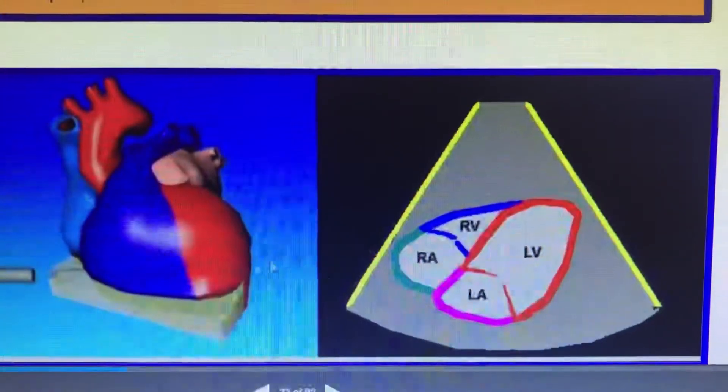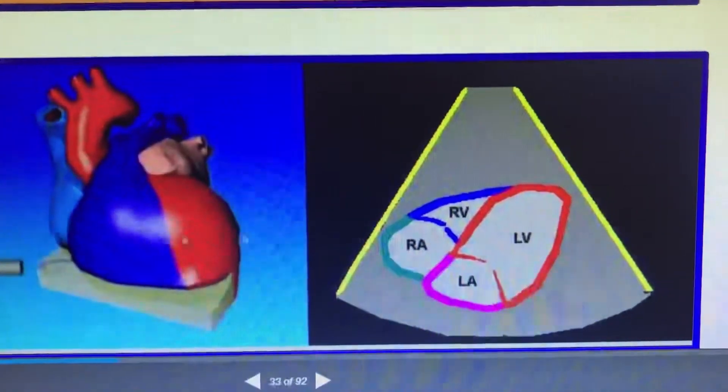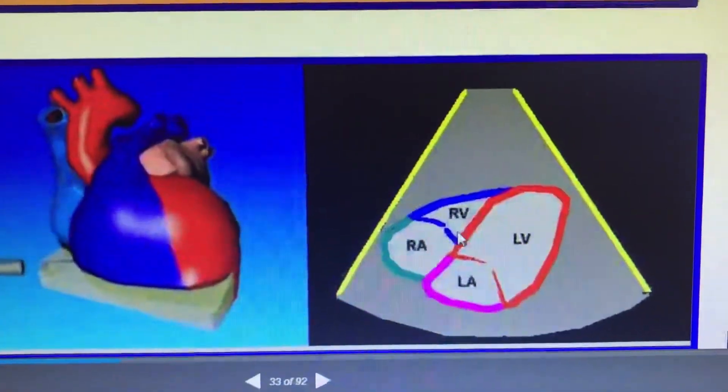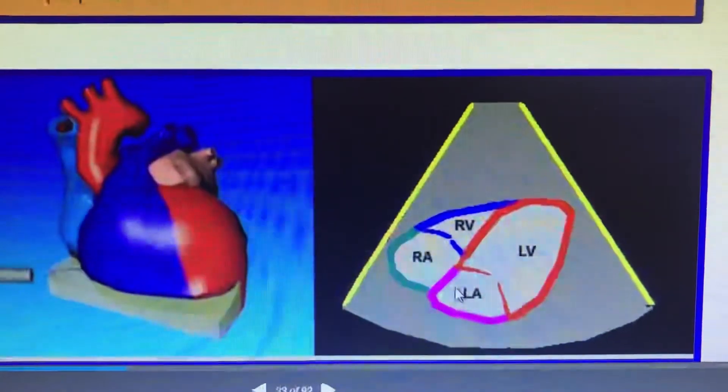This is the subcostal view. In the subcostal view, the probe will be looking at the base of the heart, and it will be seen similar to the apical four-chamber view, but with more precision towards the RA and LA.